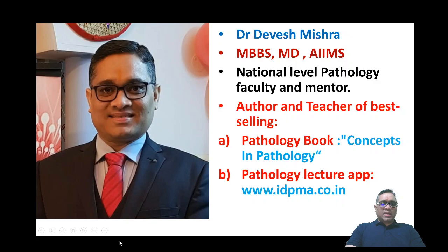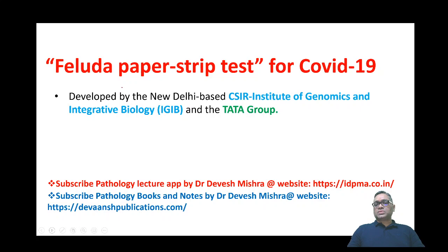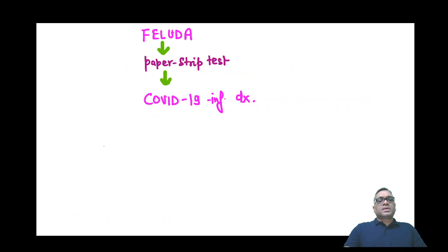Right here I am to discuss about the Feluda paper strip test for COVID-19 infection. This is developed in India — this is the first innovative test developed by the New Delhi-based CSIR Institute of Genomics and Integrative Biology, and our own proud Tata Group. They have invented this very effective test which is the Feluda paper strip test for COVID-19.